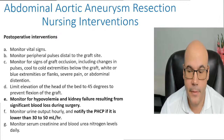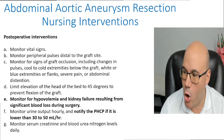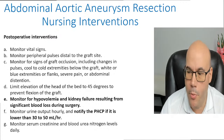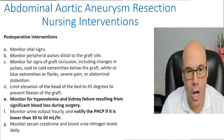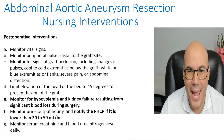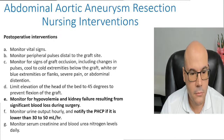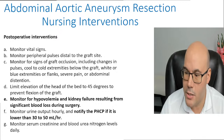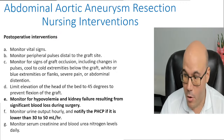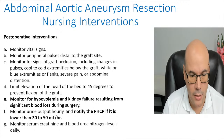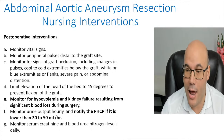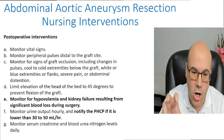We have to monitor for signs of graft occlusion, which includes changes in pulses, cool to cold extremity below the graft, white or blue extremities — cyanosis — severe pain, and abdominal distension. We also have to limit elevation of the head of the bed to 45 degrees to prevent flexion of the graft, prevent increase of intra-abdominal pressure, and prevent graft compression.